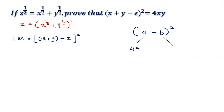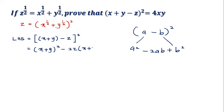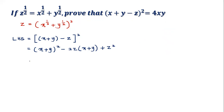So this whole group (x + y) represents 'a', and z represents 'b'. Expanding gives us: (x + y)² minus 2z(x + y) plus z². After expanding, I don't want to disturb the x and y terms because our final answer should have x and y. So I'll focus on the two terms involving z and factorize them.